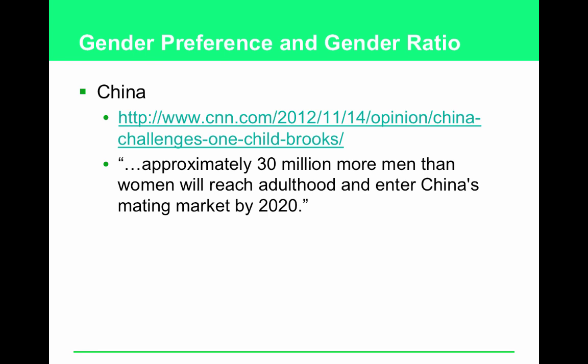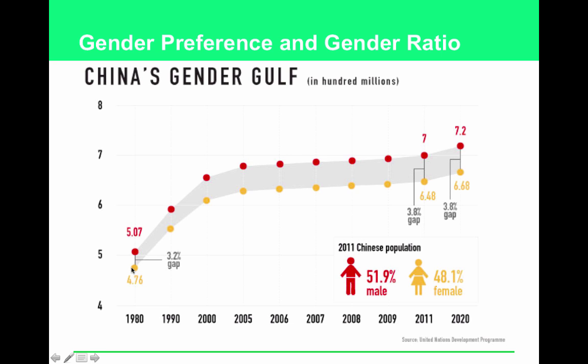How can cultural gender preference impact a country's gender ratio, and how can that eventually impact overall population growth? Cultural preference for boys can lead to lower reproductive rates and decreased population growth because there are fewer women. However, slightly more boys accounts for higher mortality rates among males. It can also lead to the redistribution of young females from other countries, pressed into service as brides. Approximately 30 million more men than women will reach adulthood and enter China's mating market by 2020 — to give you an idea, there are 301 million people in the United States total. This gender gulf has existed for a long time but has increased recently.